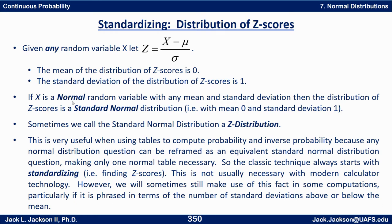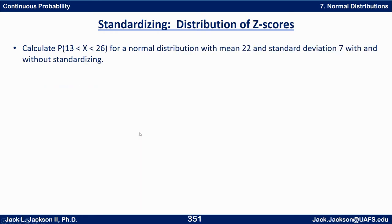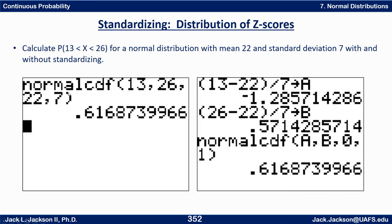Let's look at an example: calculate the probability that x is between 13 and 26 for a normal distribution with mean 22 and standard deviation 7, with and without standardizing. The easier way with calculator technology is to not standardize — just compute normalcdf from 13 to 26 with mean 22 and standard deviation 7, and we get 0.61687.